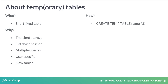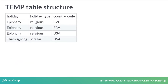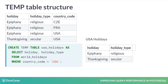Creating a temporary copy of a slow table is a good way to make it faster to query. This example shows a table of holidays by country — it has many entries with each holiday duplicated by country. You can create a temp table to look at just holidays in one country, here the USA holidays.